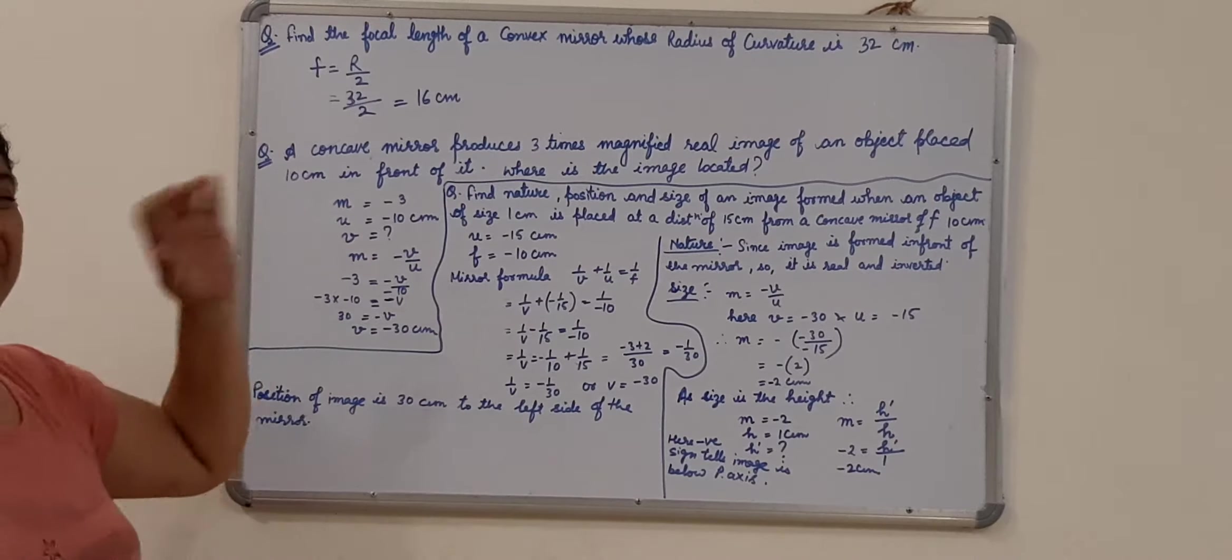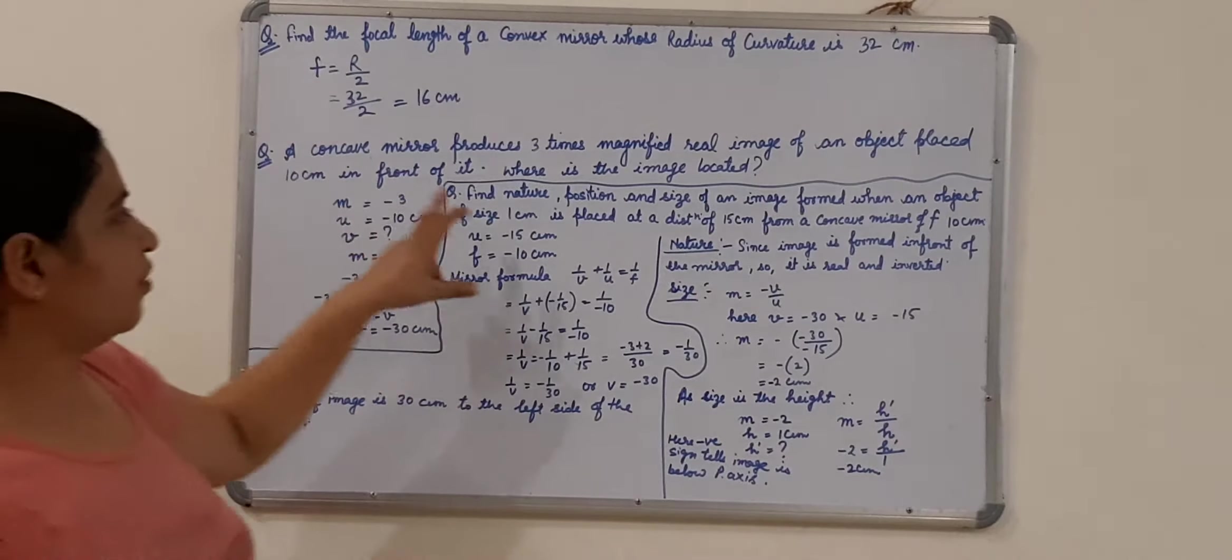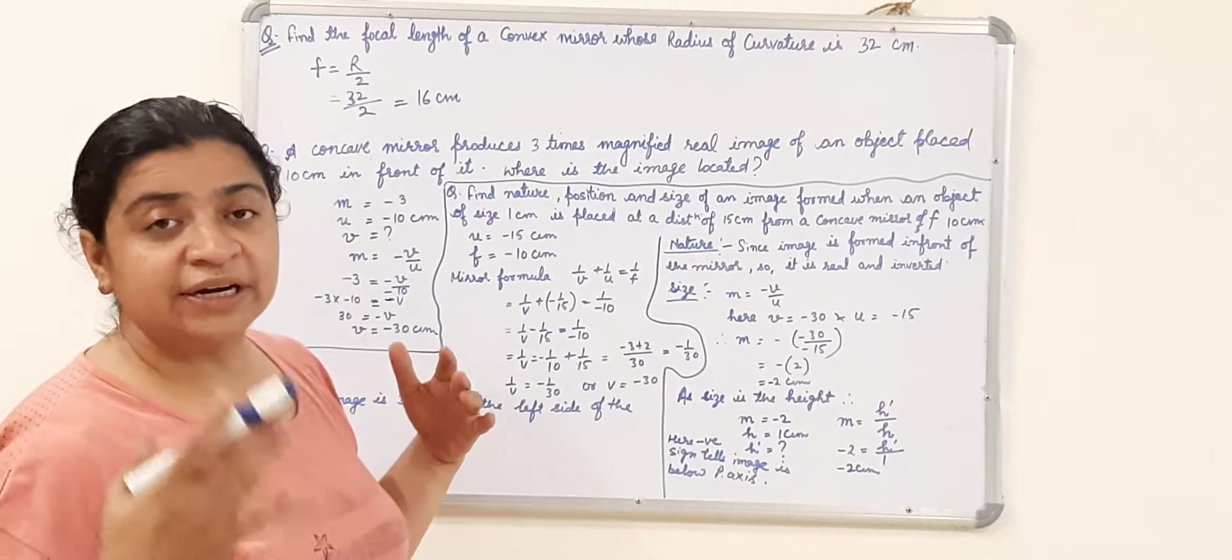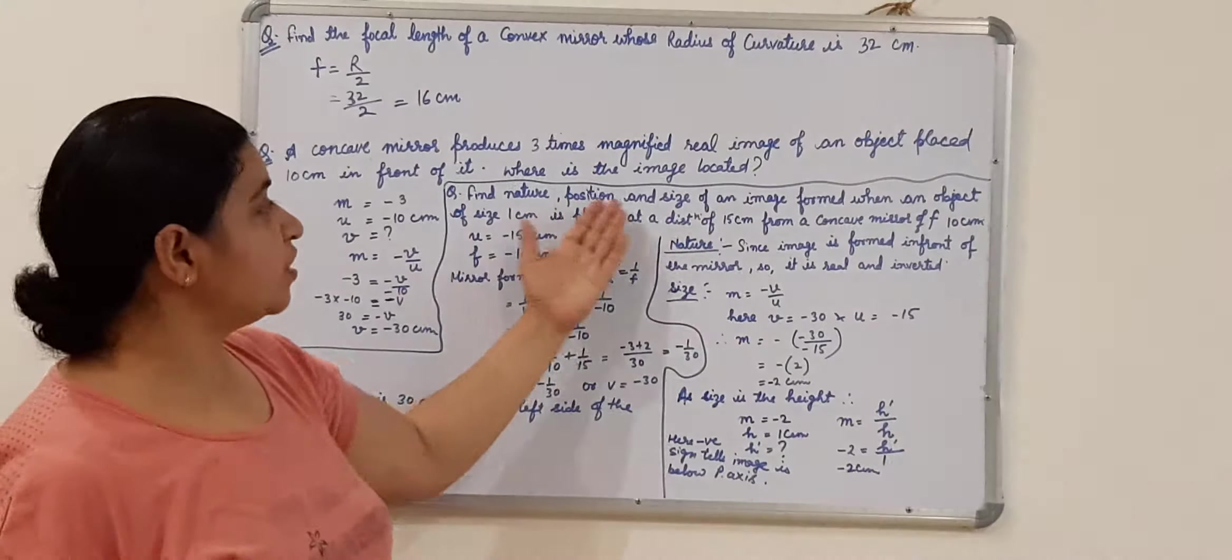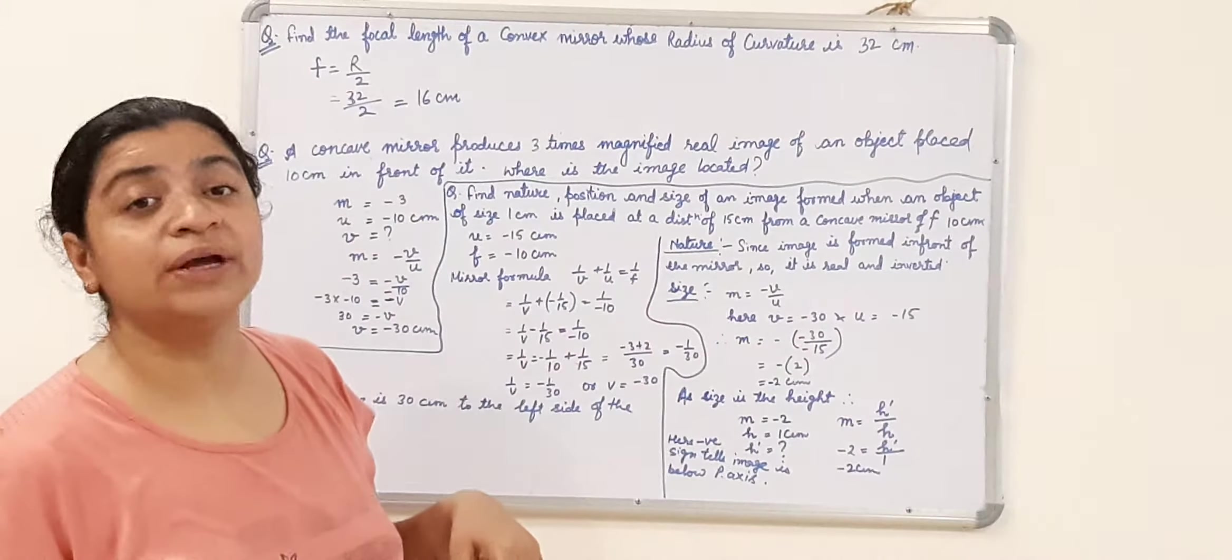Now the main thing comes, the real numerical. This type of numerical you are going to get in the exam. Find the nature, position and size. Whatever the 3 things which you had calculated in case of ray diagrams, those 3 things only, here you are going to, there you had drawn, here you are going to calculate.